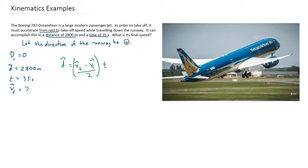Some people prefer to rearrange before they put the numbers in. But I generally like to put the numbers in first, because sometimes you can simplify with numbers, especially if you have zeros. So the distance is 2,800 meters. Let's always keep our units with it also.